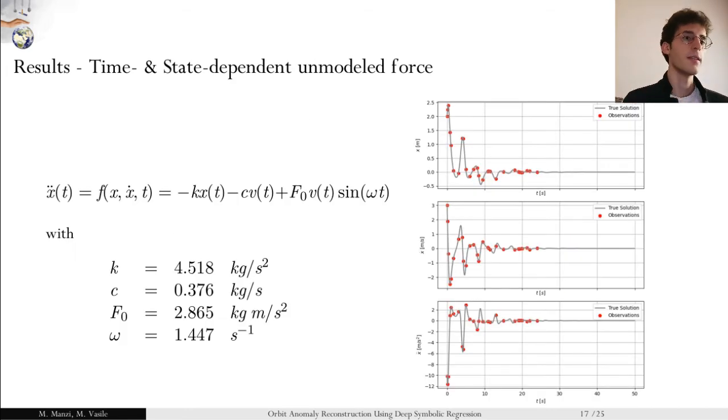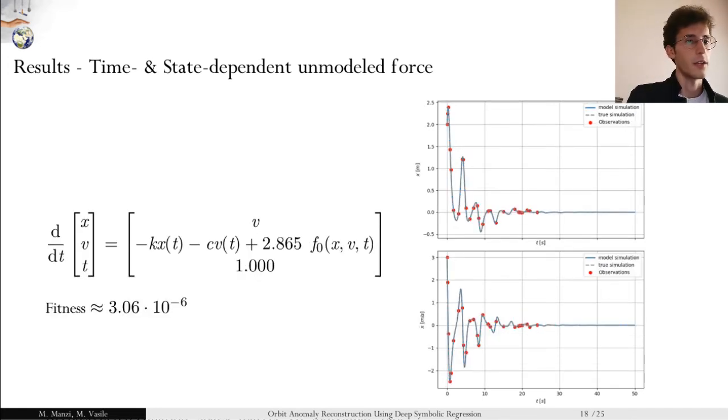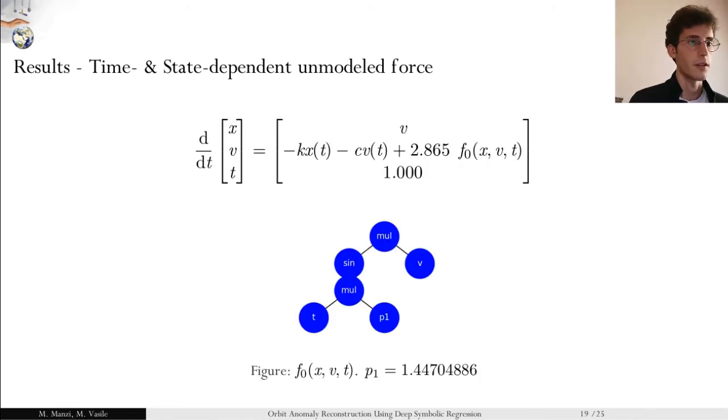In another case, we complicate the functional shape of the perturbing term, introducing a state dependence, in particular dependence with respect to the velocity. You can see the behavior of the system on the right and the relative observations. Again, we make use of the same algorithm and we are correctly able to identify the behavior of the system and the governing equation in a white box model. You can see the low value of the fitness and the correct identification of the F0 function given here.